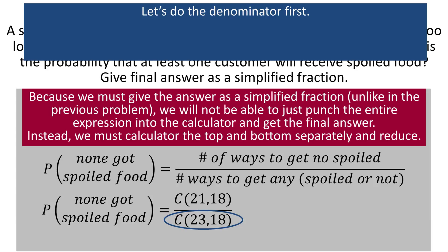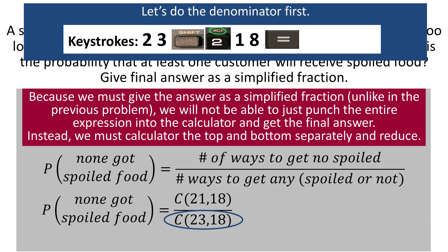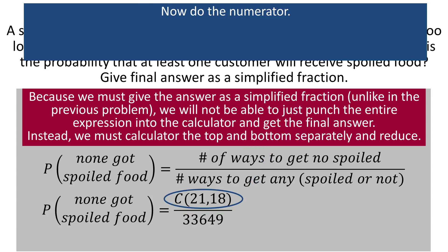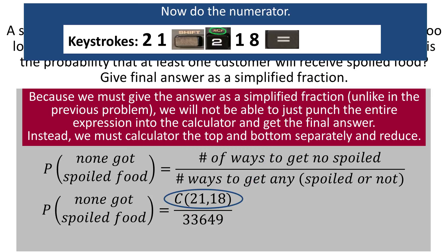If we do the denominator first, that's a combination of 23 things taken 18 at a time. So you put in 23, you do the shift 2 for combination, then 18, and to make it evaluate, you press equal. And when you do that, you'll come up with 33,649. Now to the top. Same idea, but this time we've got 21, shift 2, 18, and press equal to make it evaluate. And that comes out to be 1,330.